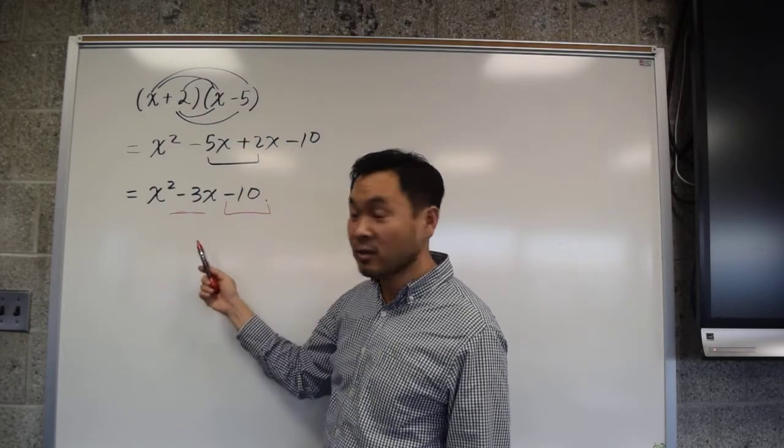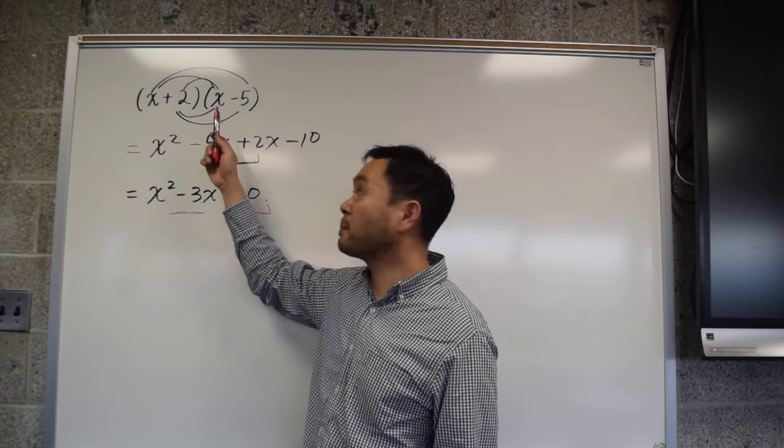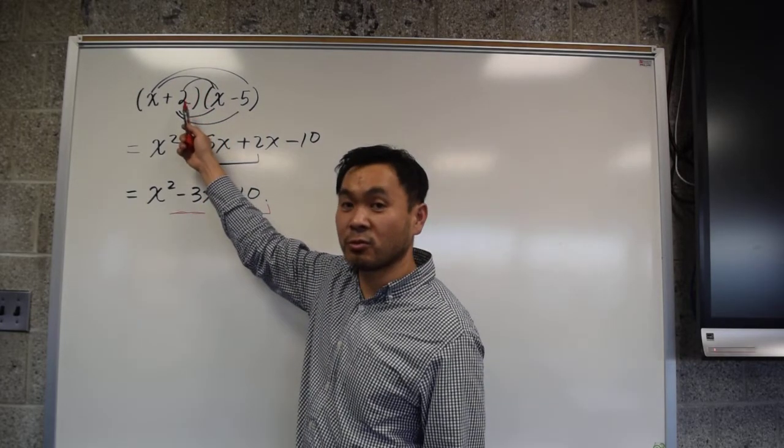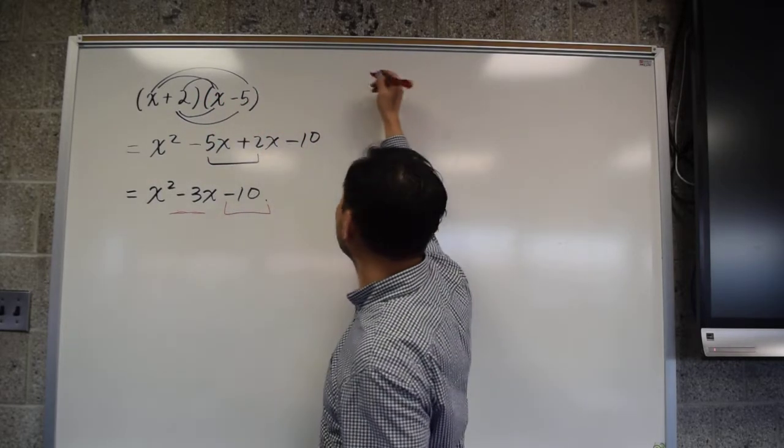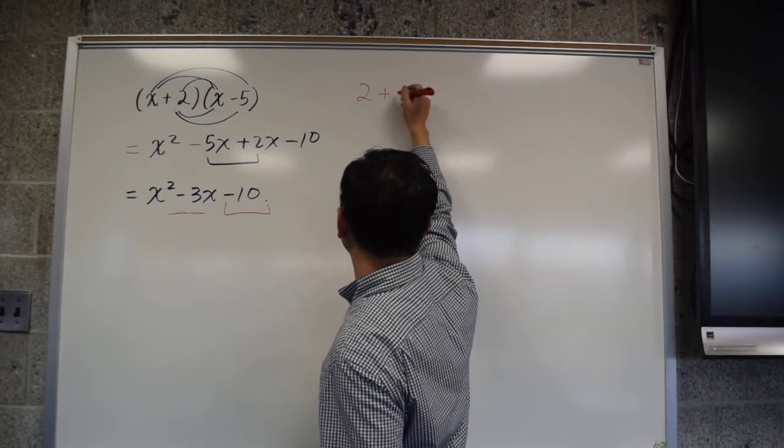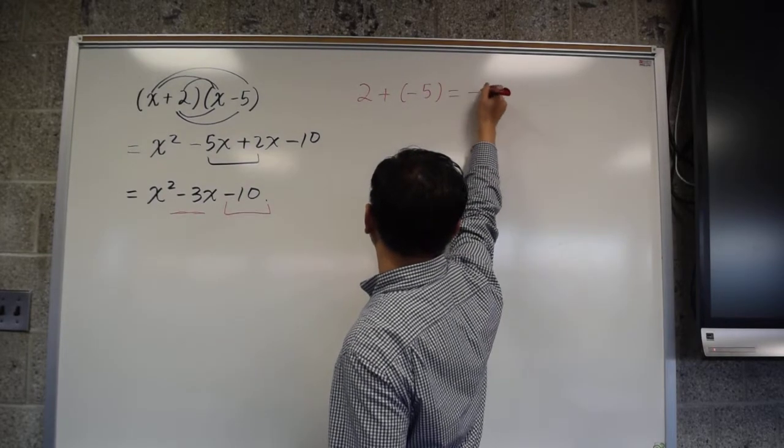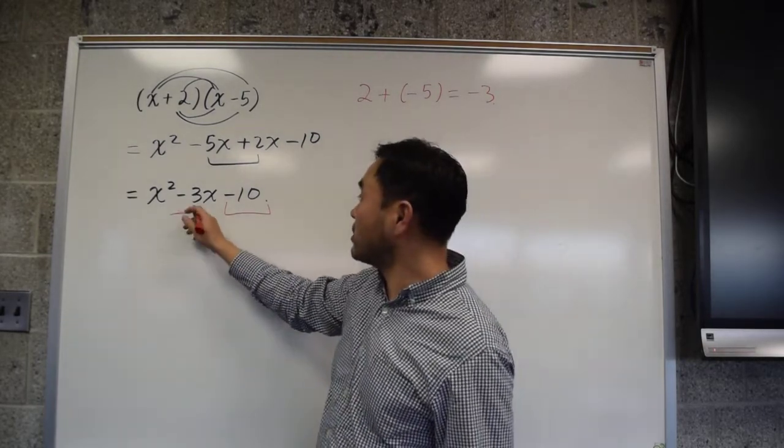So -3 is what? It's 2 plus -5, right? What is 2 plus -5? It's -3. So this is the sum.